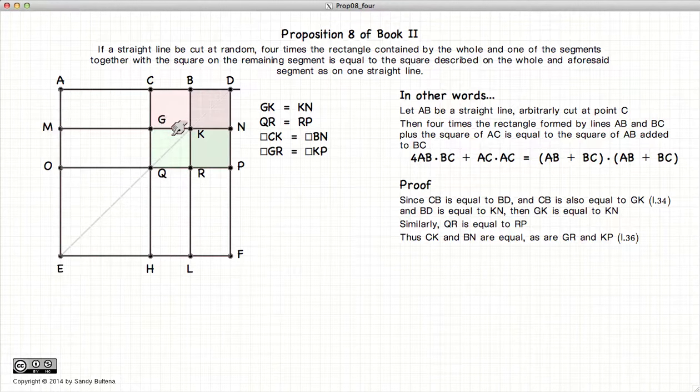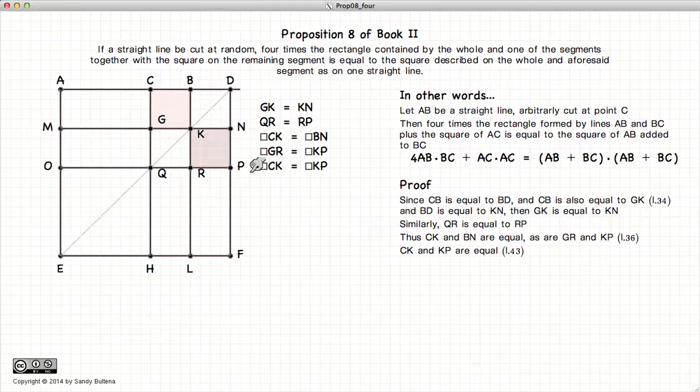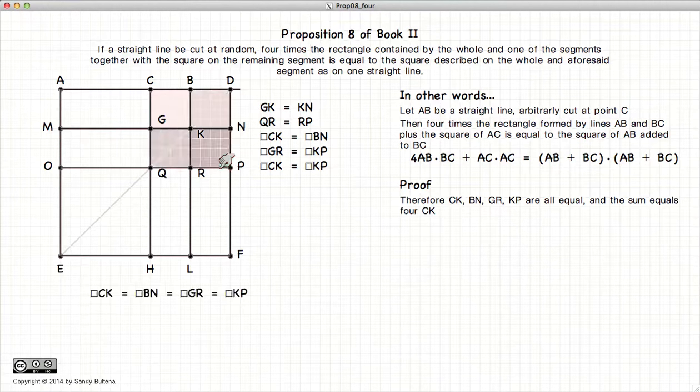Now, since GK is equal to KN, and these two rectangles are along parallel lines, then from Proposition 36, the area CK is equal to the area BN, and likewise GR and KP are also equal in area. If we look at our square CDPQ, CK and KP are complements, and hence they are also equal. So what we've basically demonstrated is that these four squares are all equal in area.